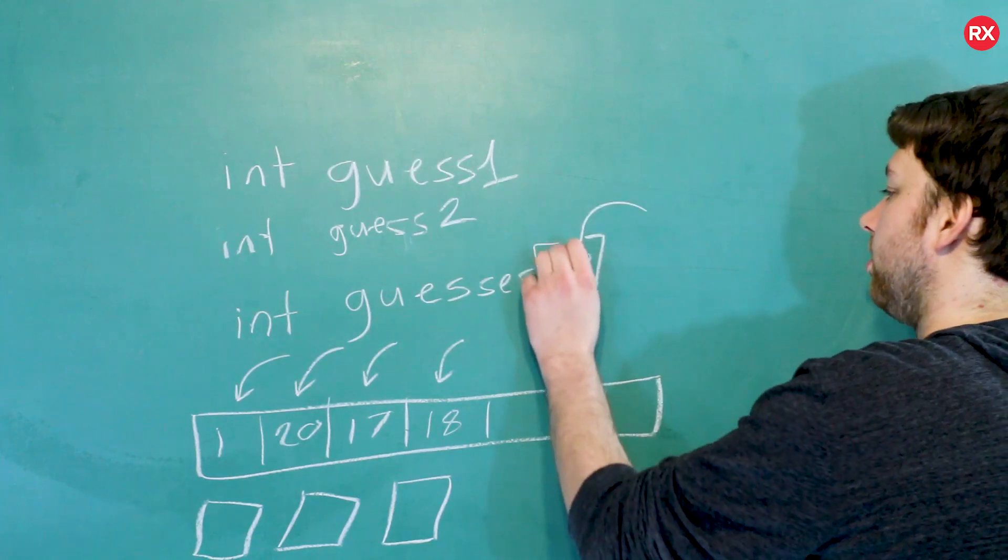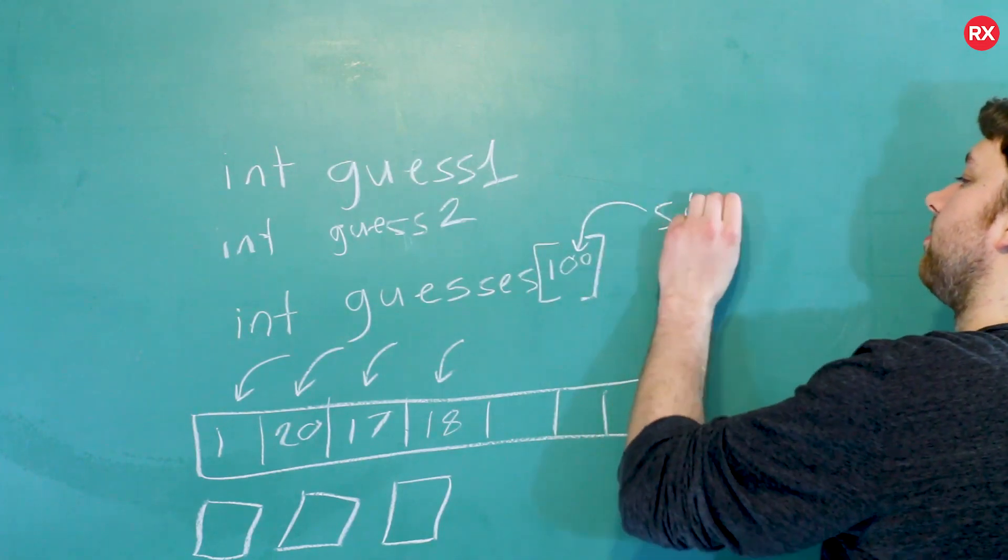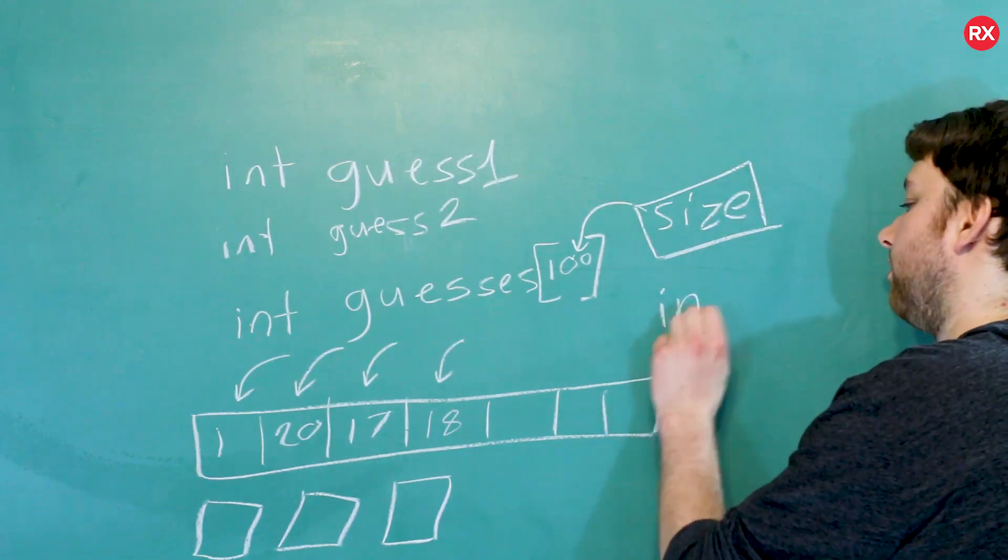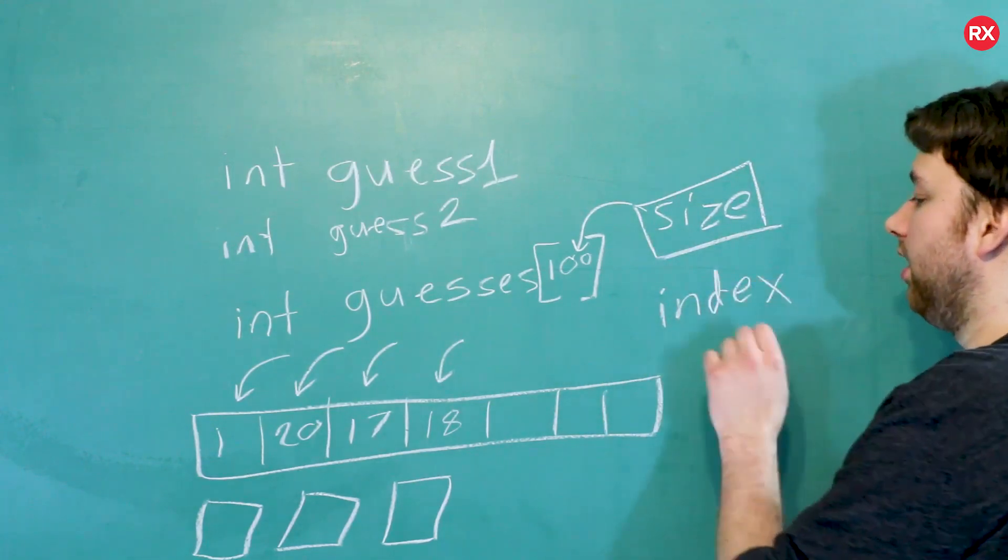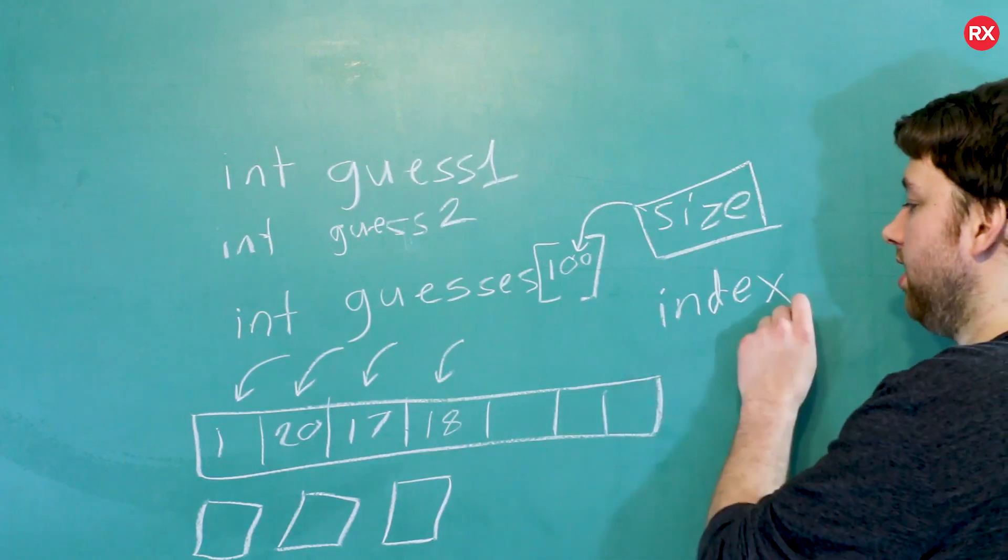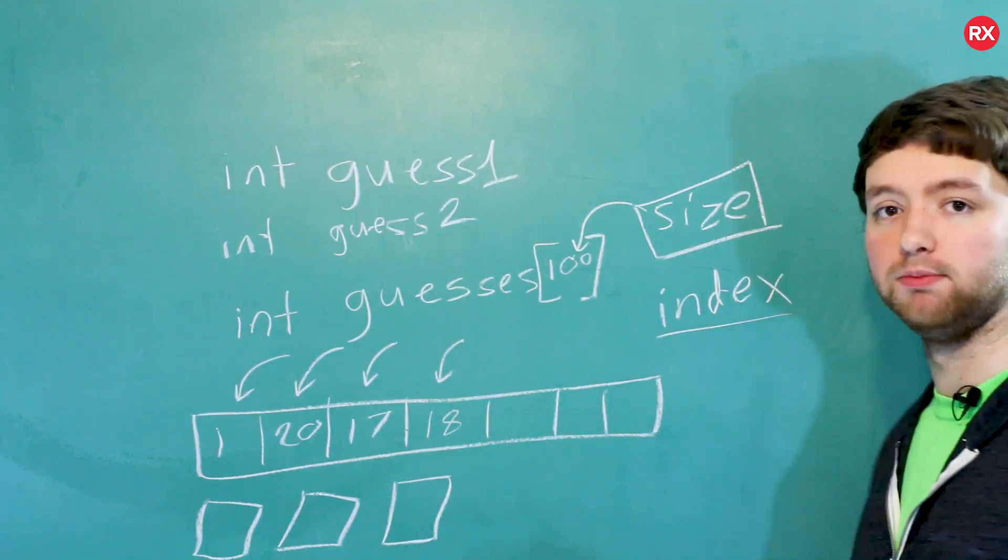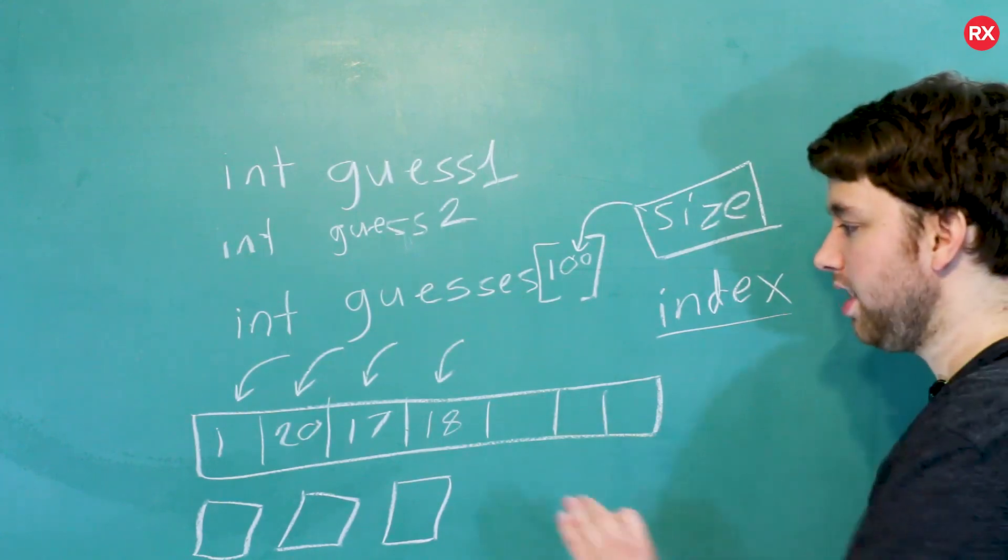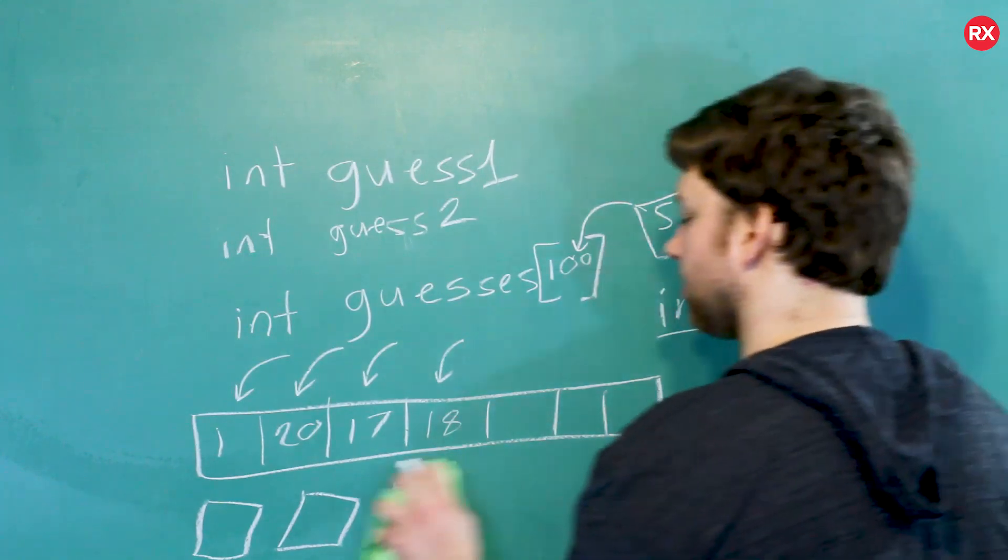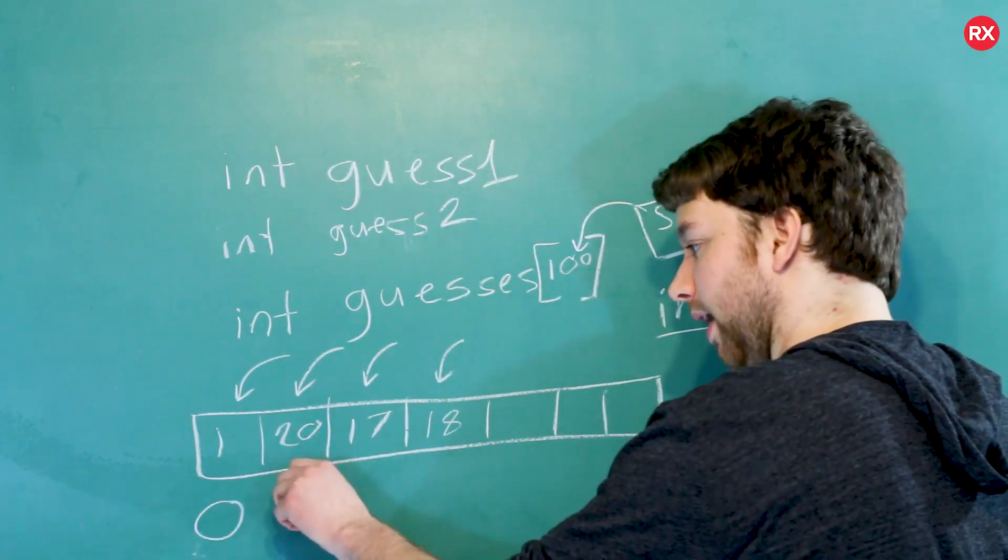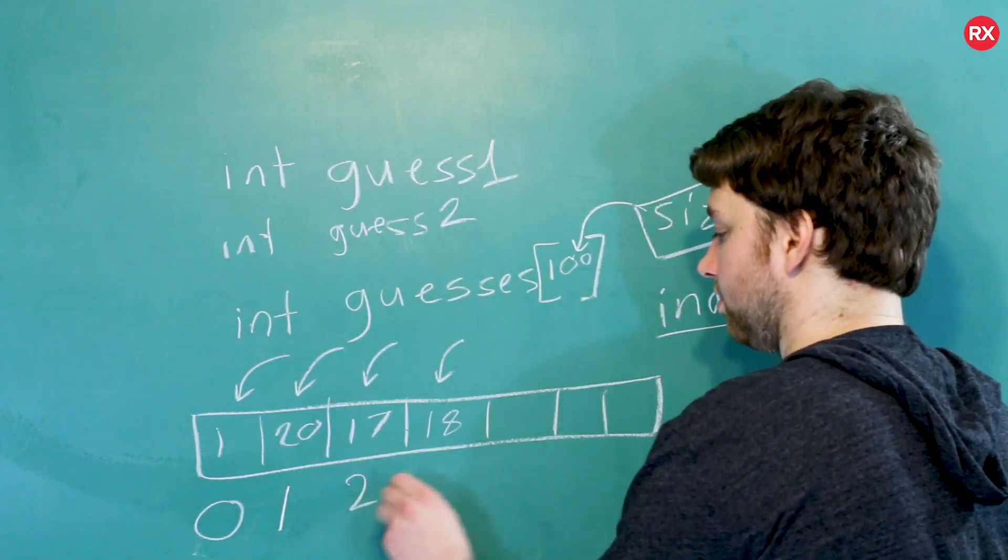So this number here is known as the size. There's another important term you need to understand, and that is an index. Each element has an index. It basically tells you where in the array that element is. And an array is zero-based, and what that means is that the first element has the index zero. The second item has an index one, and so forth.